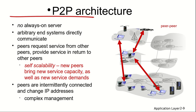The second major paradigm is peer-to-peer architecture. In P2P, there is no always-on server — just arbitrary end systems directly communicating with each other. Both can behave as client and server. These end systems are called peers, and they request and provide services to one another.